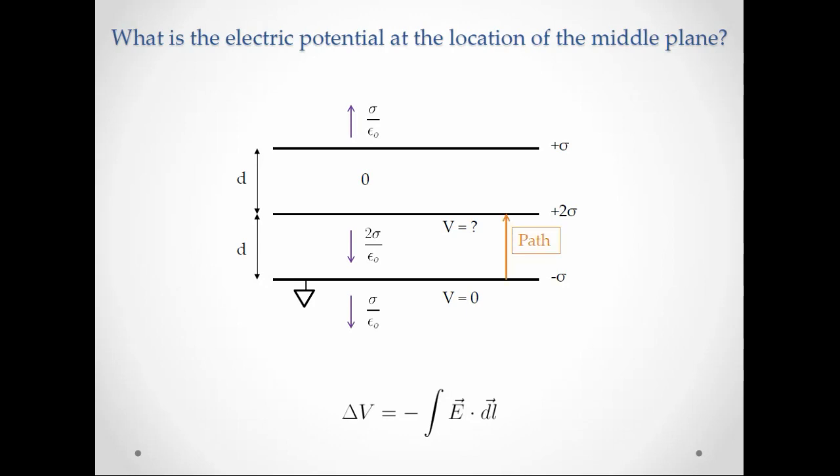So first I draw in my path. My path will start at the very bottom plate and go up to the middle plate. I notice that since it's a dot product, I can expand it as magnitude of E times the magnitude of DL times the cosine of the angle between them.